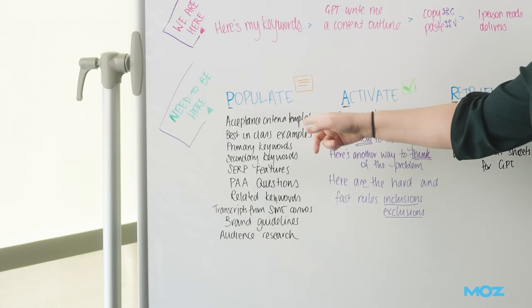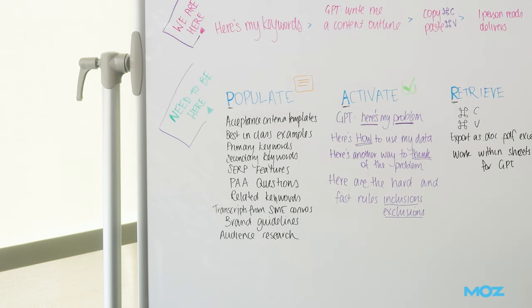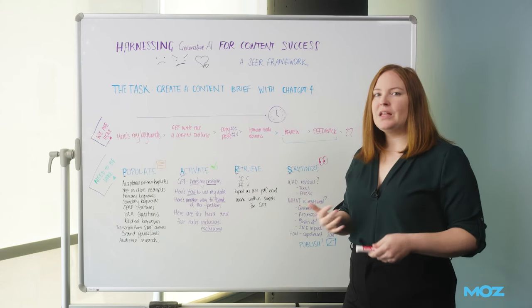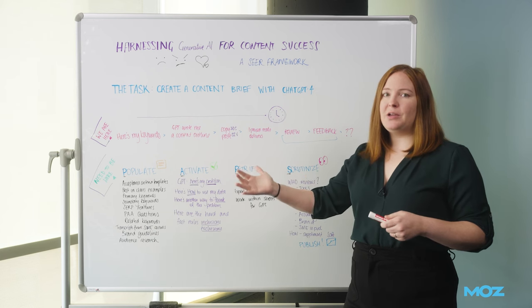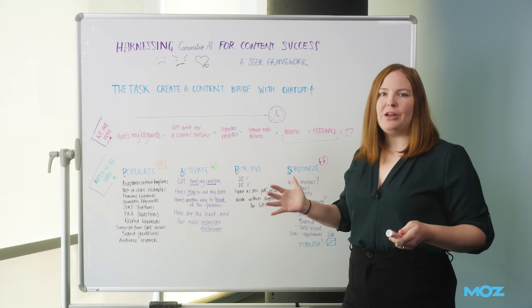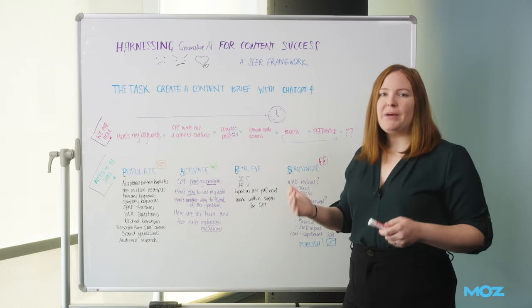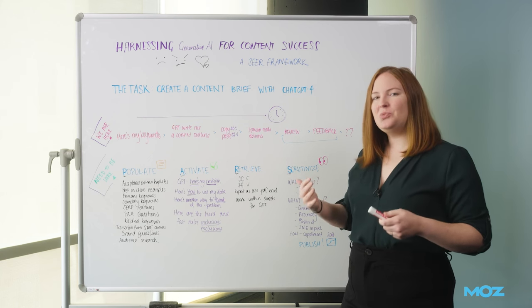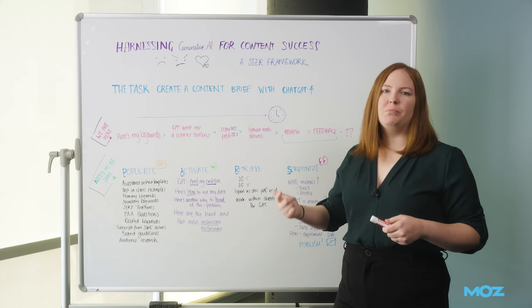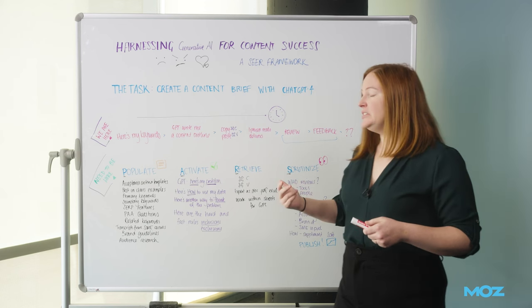So let's get into it step by step. So the first step is Populate. And let's take a step back. Imagine you were starting at Seer as a new hire. I wouldn't say, go to the library and learn everything you can about everything. That person would come back a very intelligent person, but they still wouldn't know our process and our approach and what our clients are expecting.